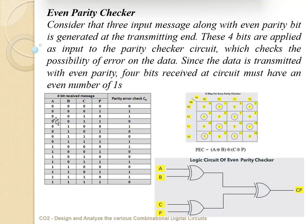Let us check: A=0, B=0, C=0, P=0 — zero ones, which is even parity, so the parity error check bit is 0. For A=0, B=0, C=0, P=1 — one 1 — the parity error check bit becomes 1, indicating an error. Proceeding with all possible combinations of A, B, C, and P: for 1, 1, 1, 1 the parity check bit becomes 0. Applying K-map simplification for the even parity checker, we obtain: parity check = A XOR B XOR C XOR P. The logic circuit of the even parity checker is as shown in the figure.